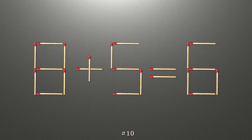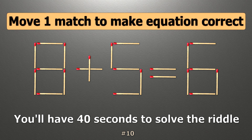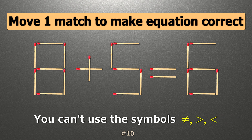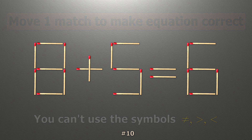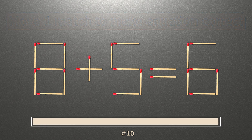We have the equality 8 plus 5 equals 6. Our equality is wrong. We need to move one match to make our equality correct.